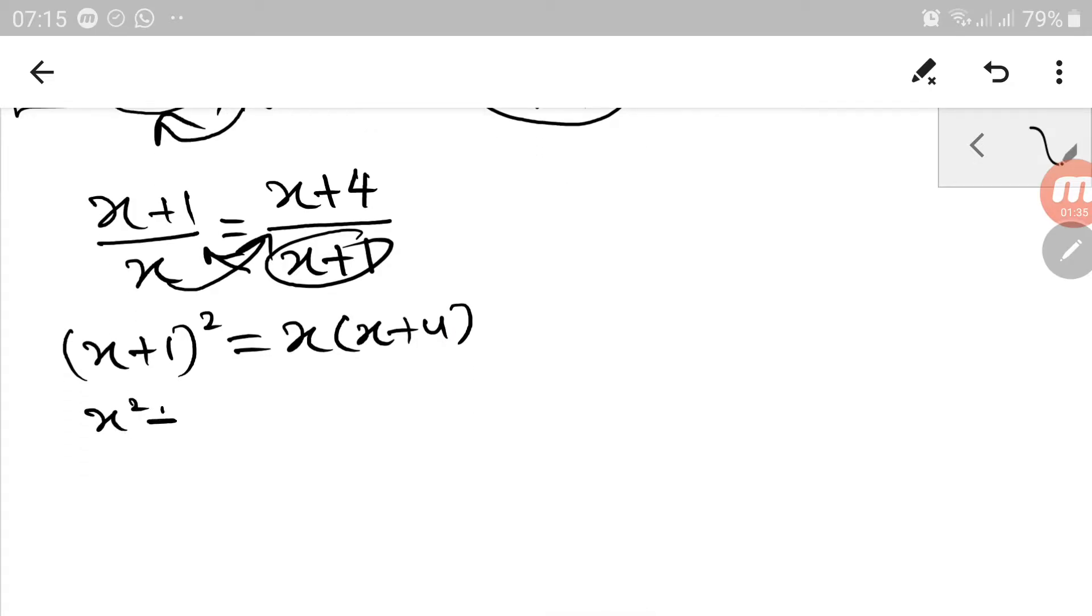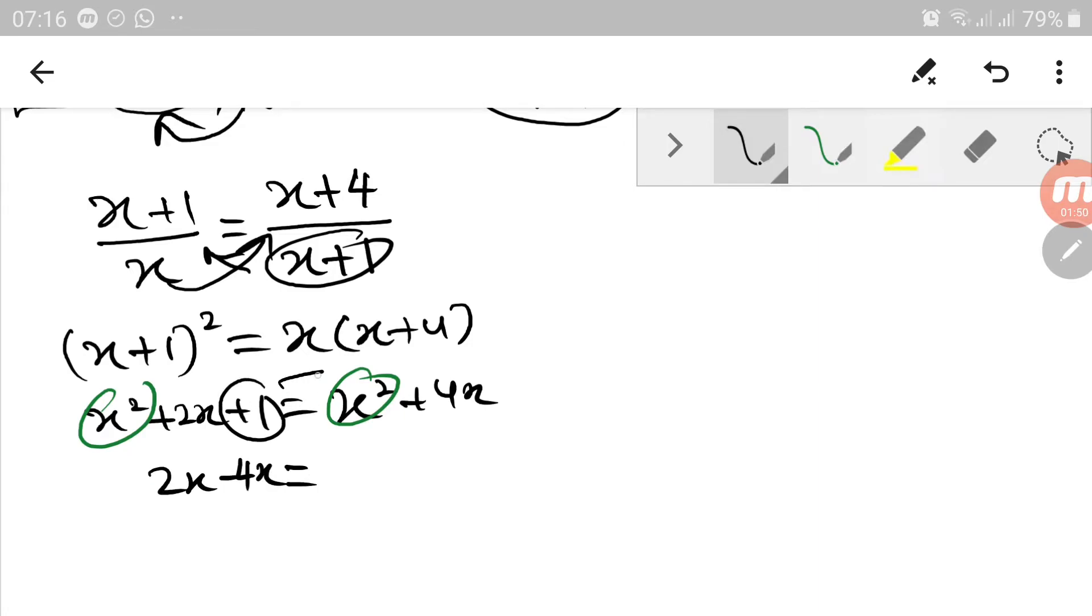So we expand them: x squared plus 2x plus 1. On the right-hand side, x squared plus 4x. We know these two will cancel. Then, 2x minus 4x equals 1.